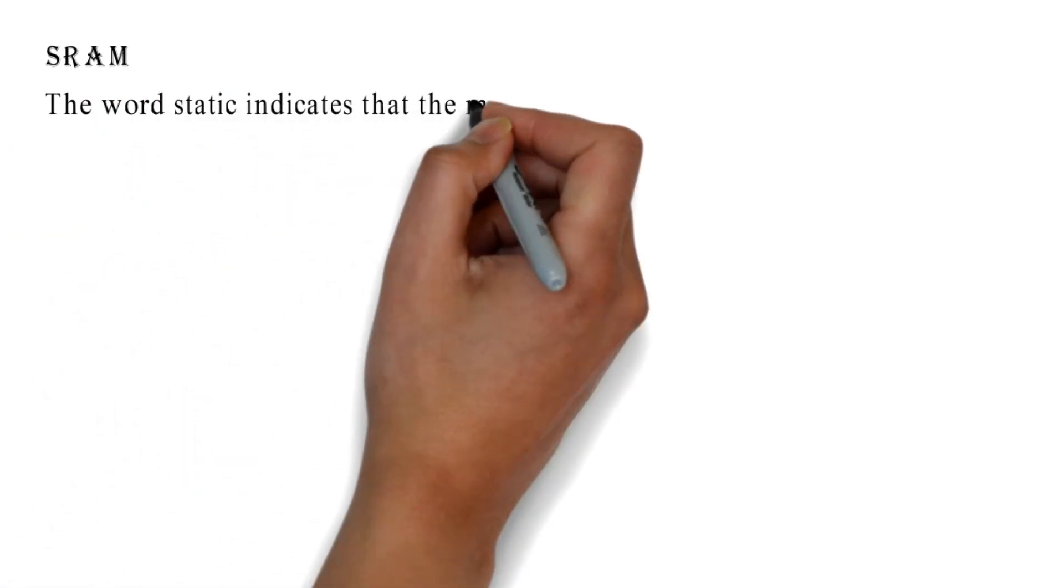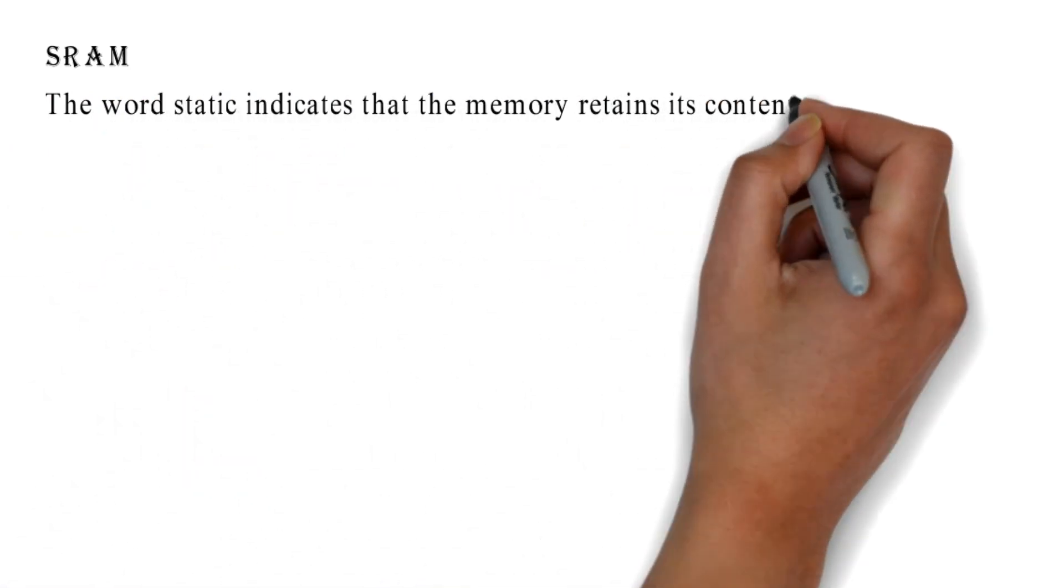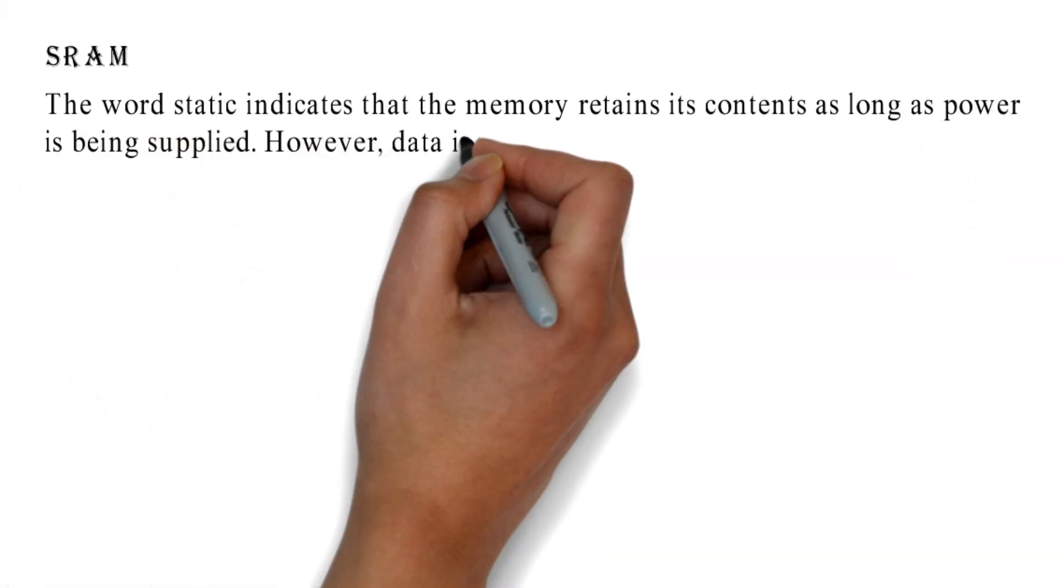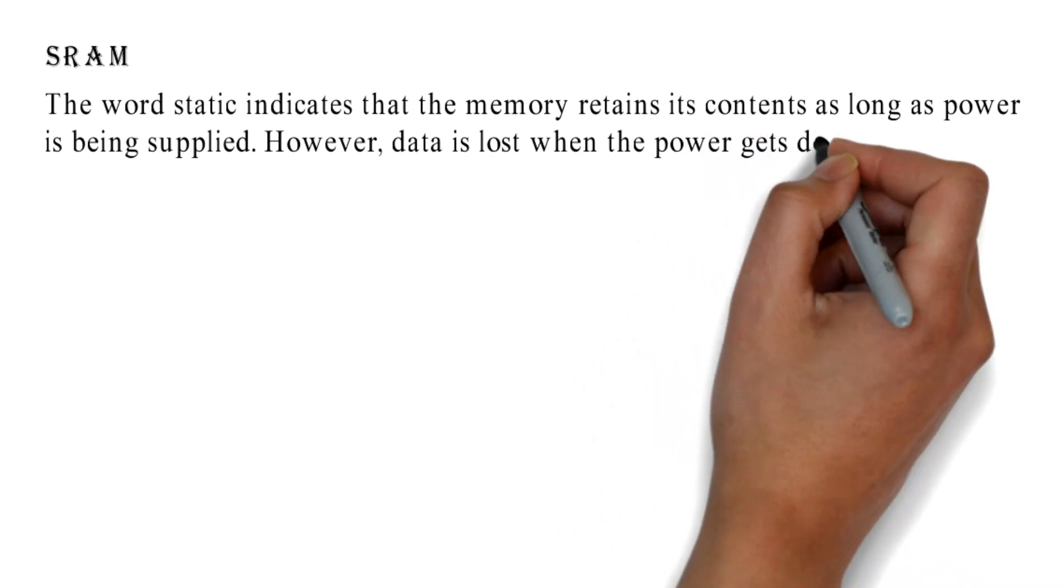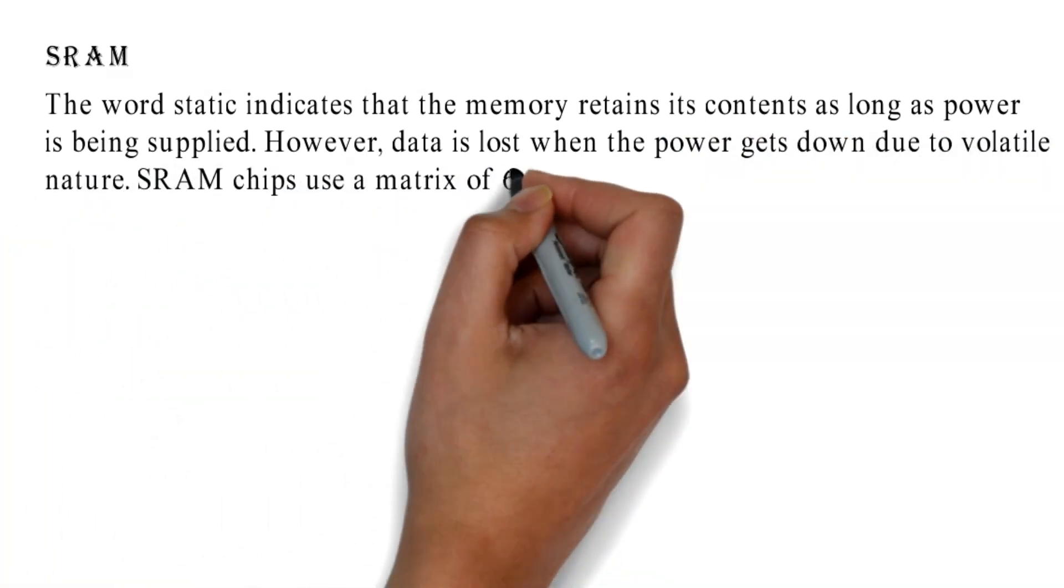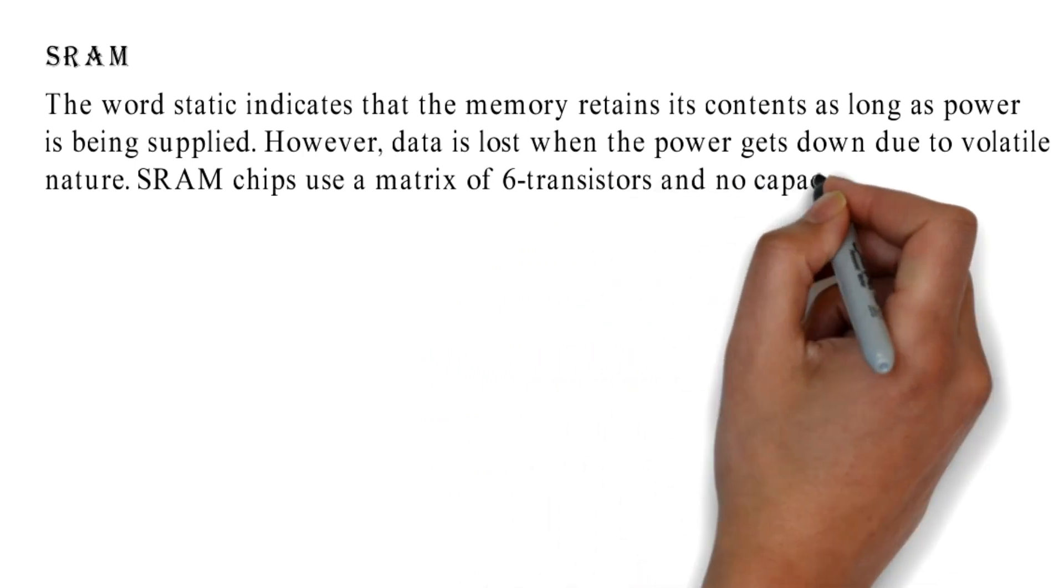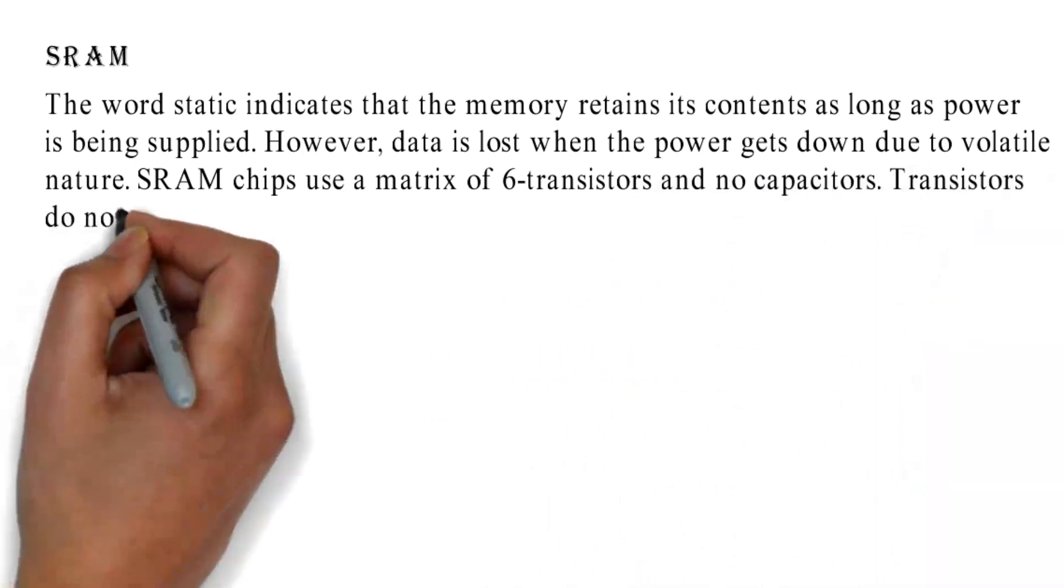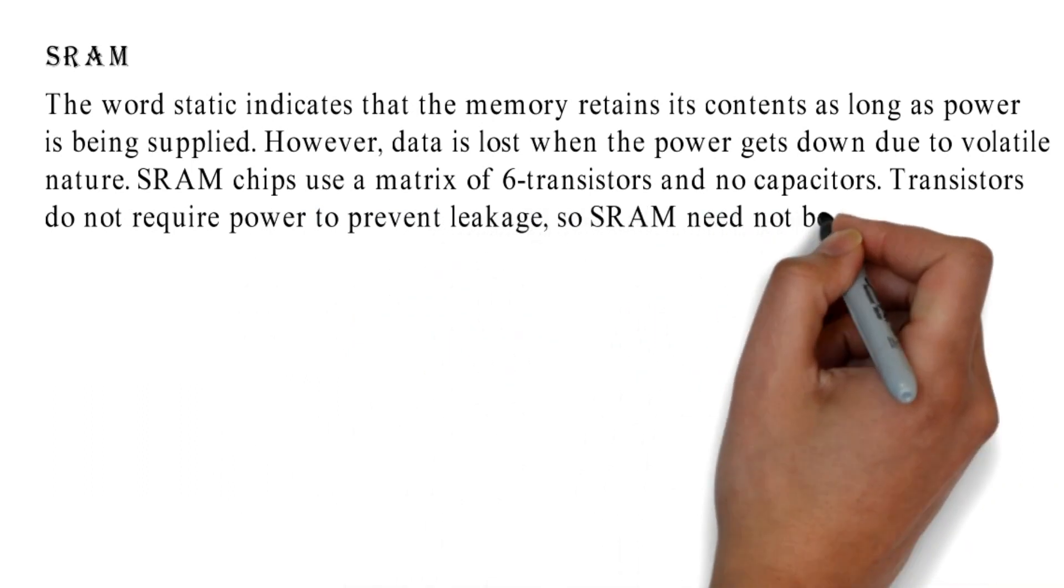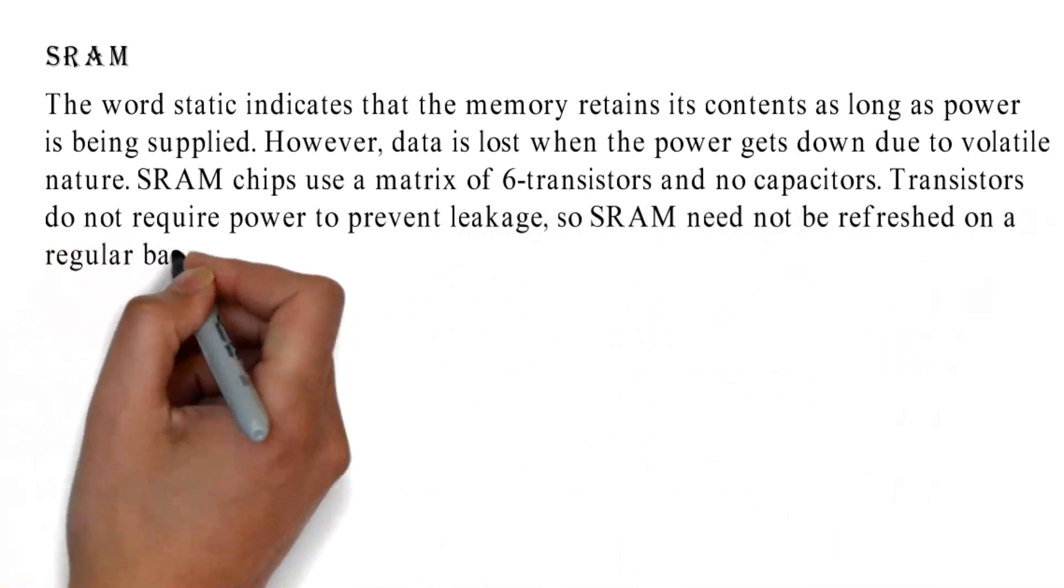SRAM: The word static indicates that the memory retains its contents as long as power is being supplied. However, data is lost when the power gets down due to volatile nature. SRAM chips use a matrix of six transistors and no capacitors. Transistors do not require power to prevent leakage, so SRAM need not be refreshed on a regular basis.